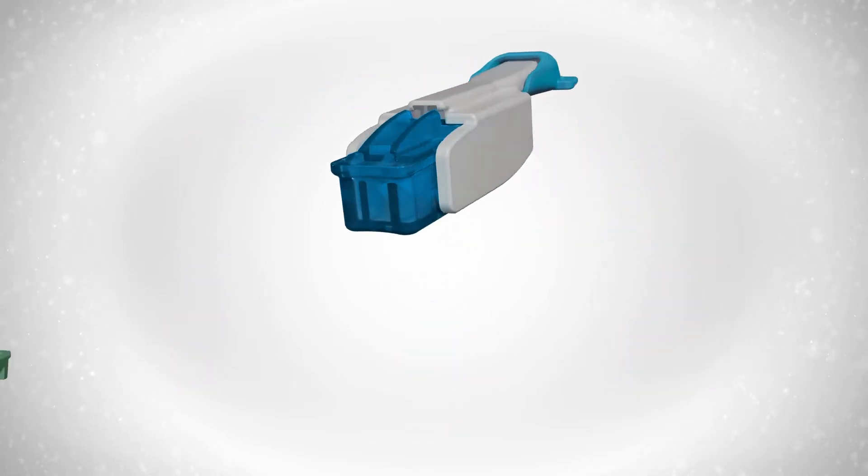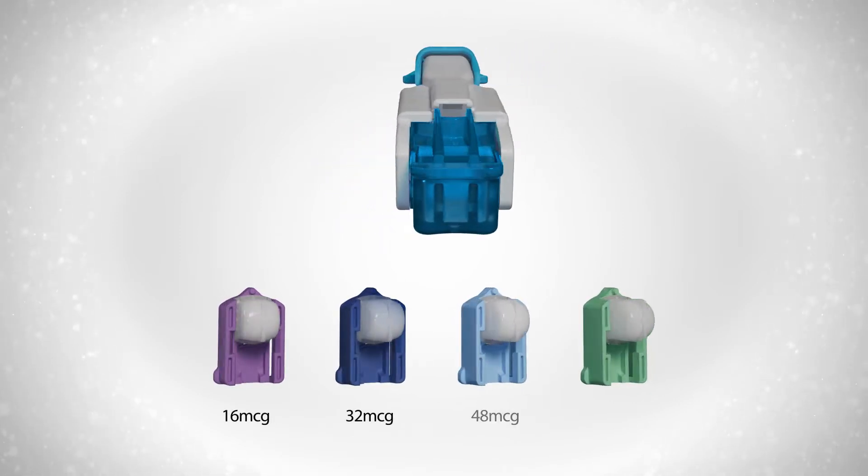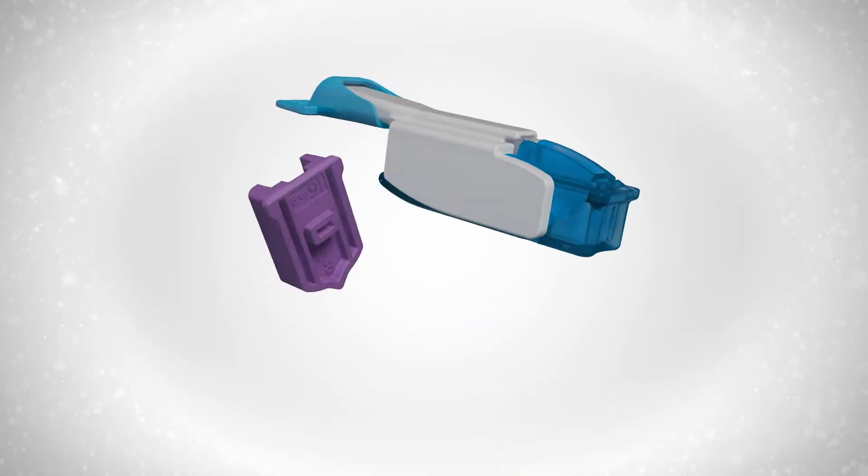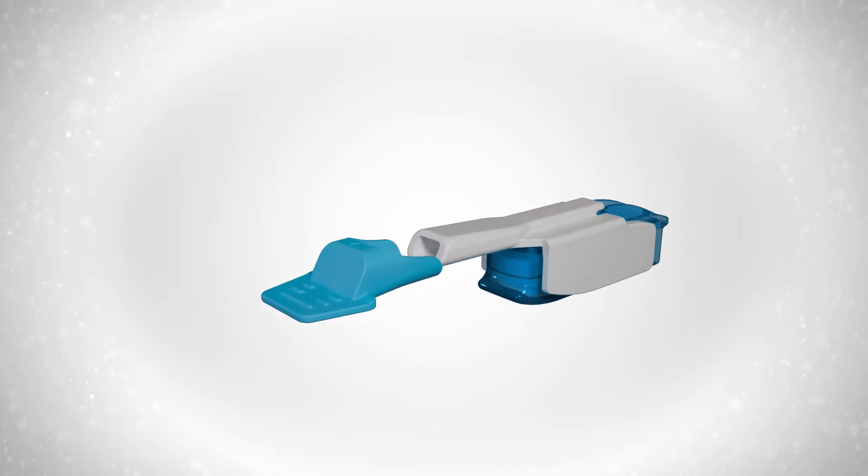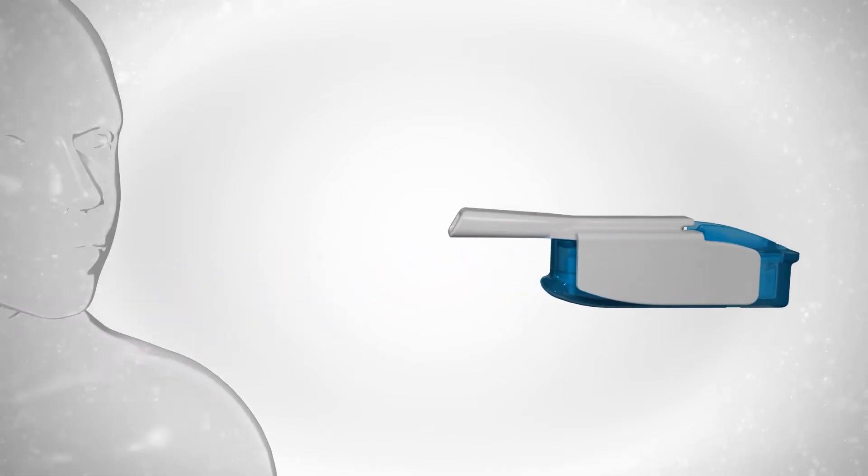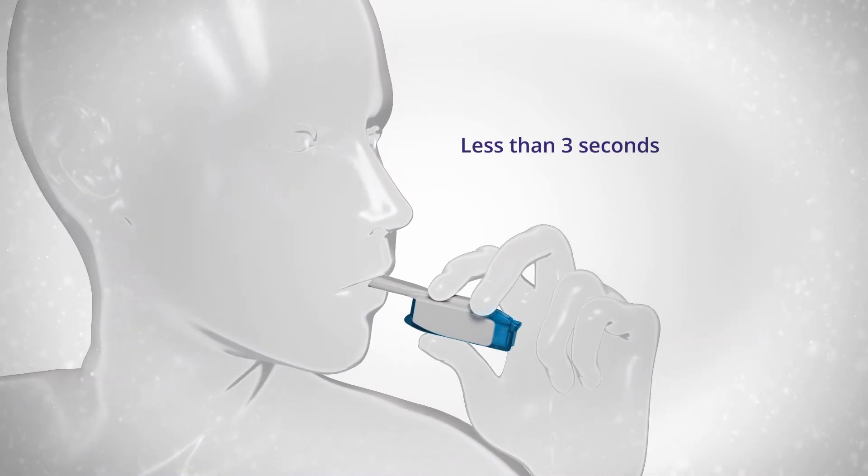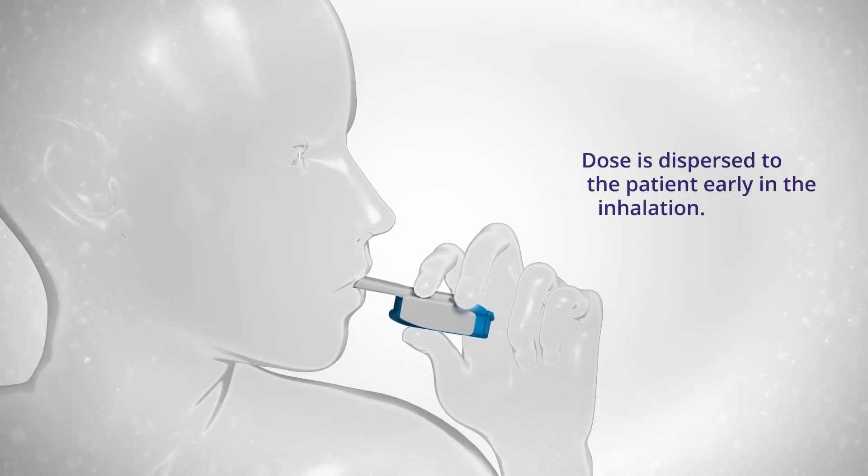Tyveso DPI uses single-use pre-filled powder cartridges available in four dosing strengths for simple flexible titration. There is one cartridge per dose. The patient takes the dose in a single inhalation typically lasting less than three seconds. The dose is dispersed to the patient early in a single inhalation.